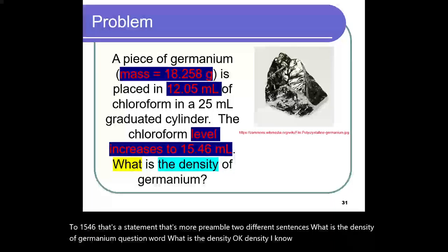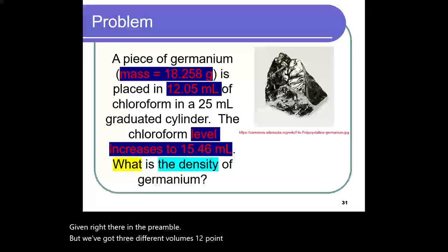I know that's mass and volume. Again, we've got the mass given right there in the preamble. But we've got three different volumes. 12.05 milliliters of chloroform. In a 25 milliliter graduated cylinder, the chloroform level rises to 15.46 milliliters.